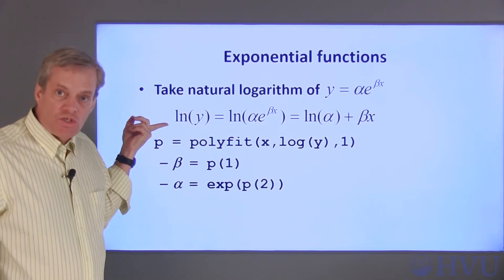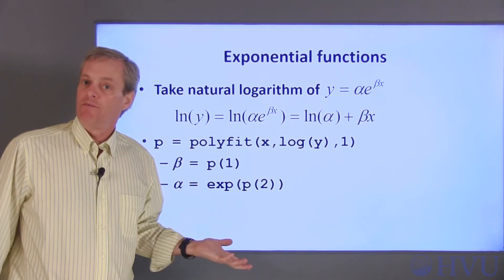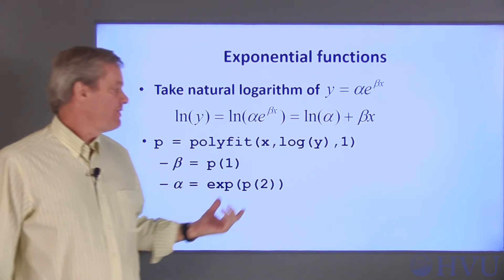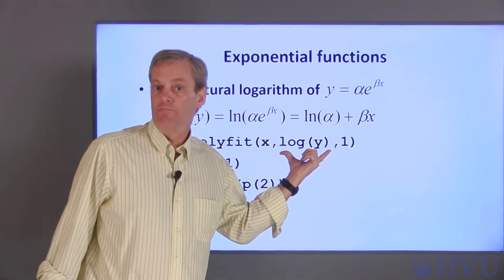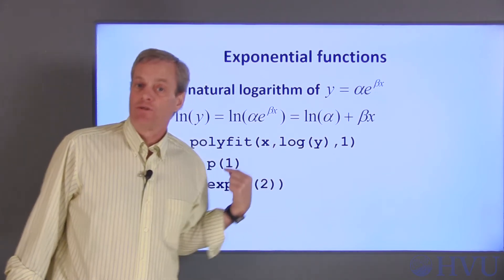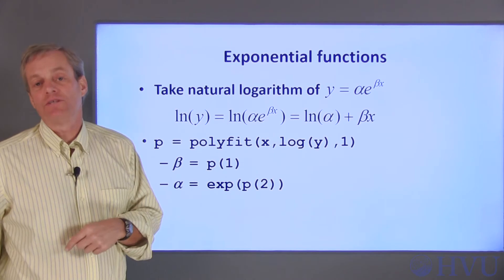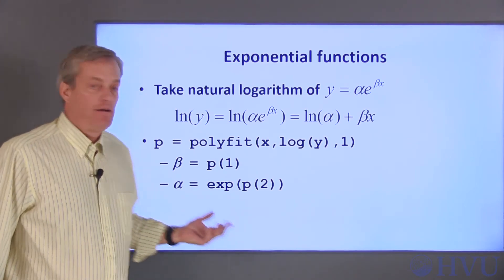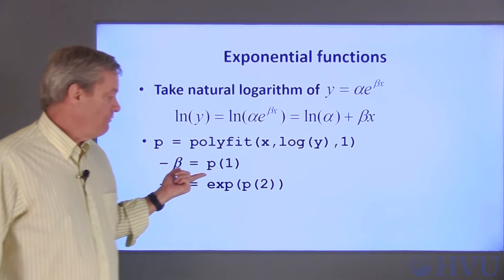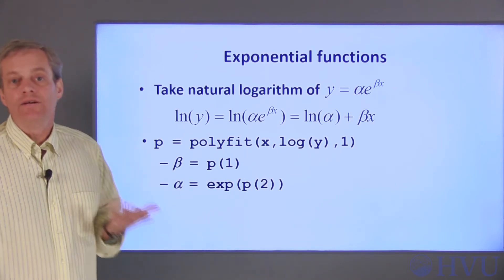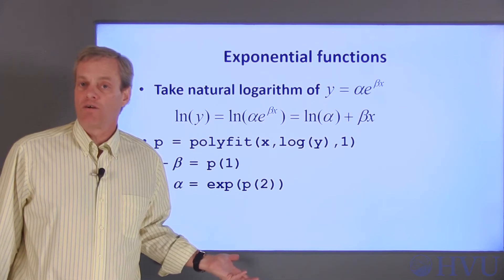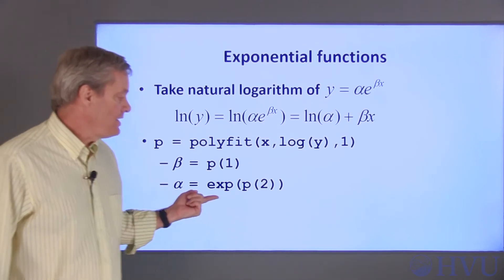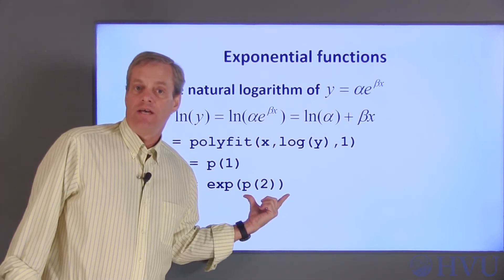We can fit this straight line to our data with the polyfit command. Just send the polyfit function the natural log of the measured y data. It'll return the slope and the y-intercept of the straight line. Beta is the slope of the straight line, so beta is just p of 1. The y-intercept of the straight line curve fit is the natural log of alpha, so alpha is e to the y-intercept.